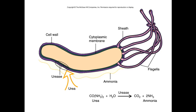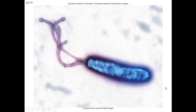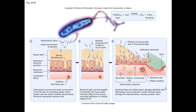H. pylori resides in the stomach mucus and thins it out. The bacteria initiate inflammatory and immune responses that destroy the stomach epithelium and lead to ulcer formation. The epidemiology is the usual fecal-oral route, and this progresses with age — over 80% of individuals on the planet can be infected by the age of 75.